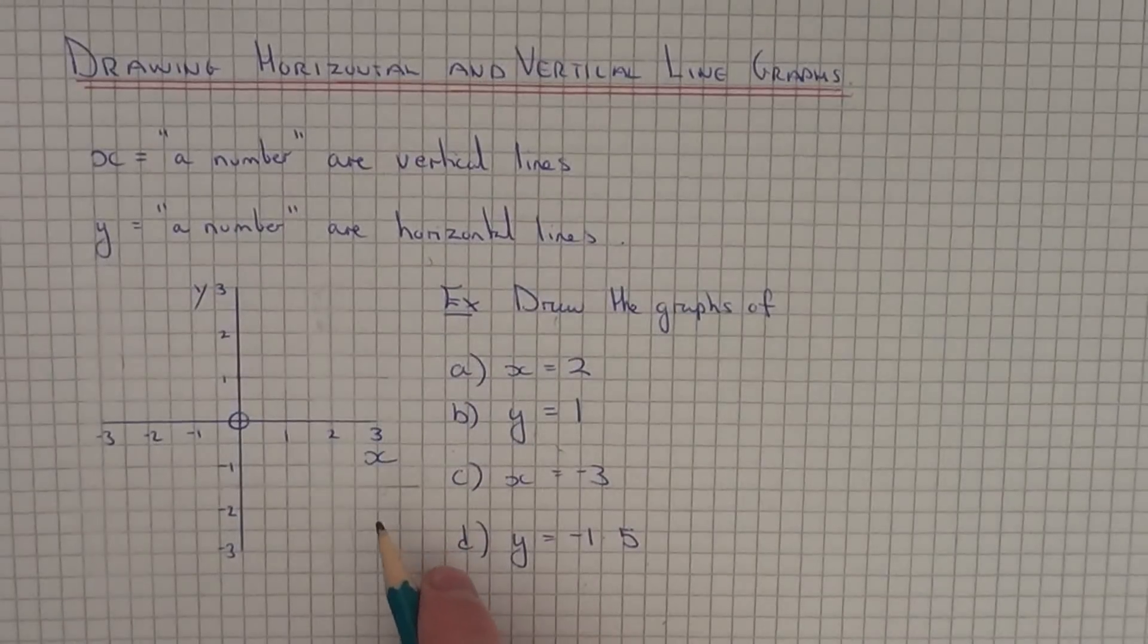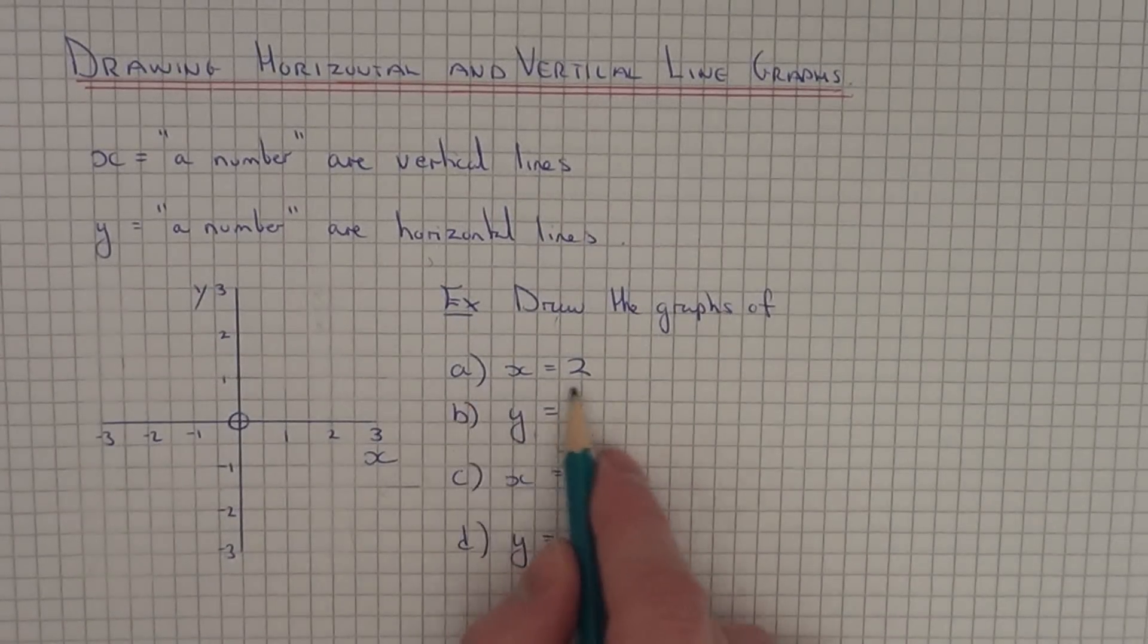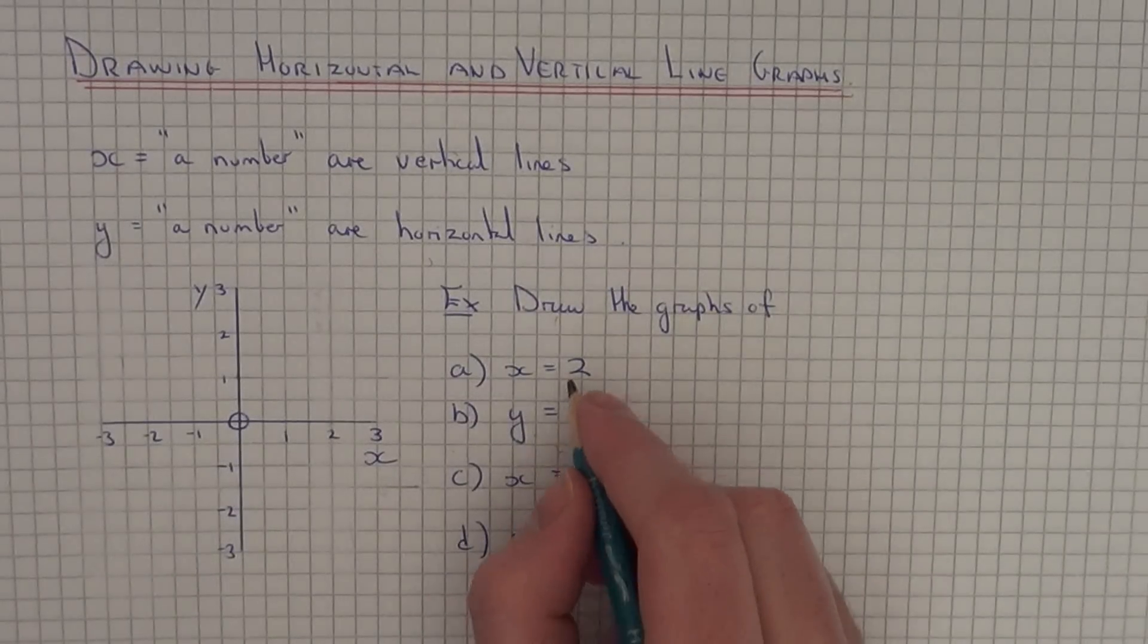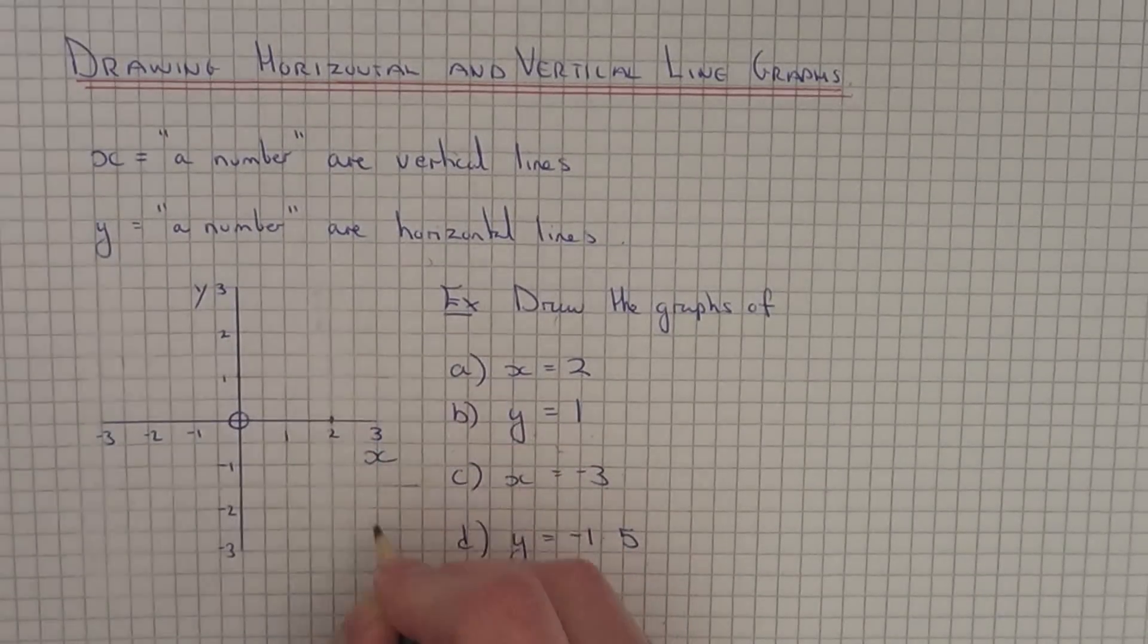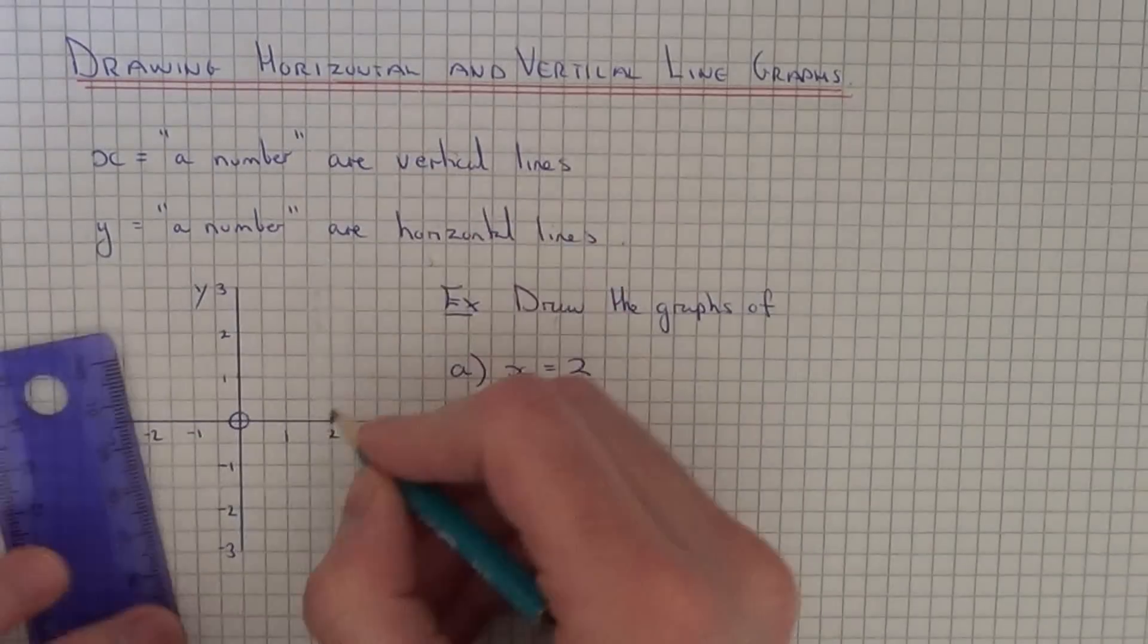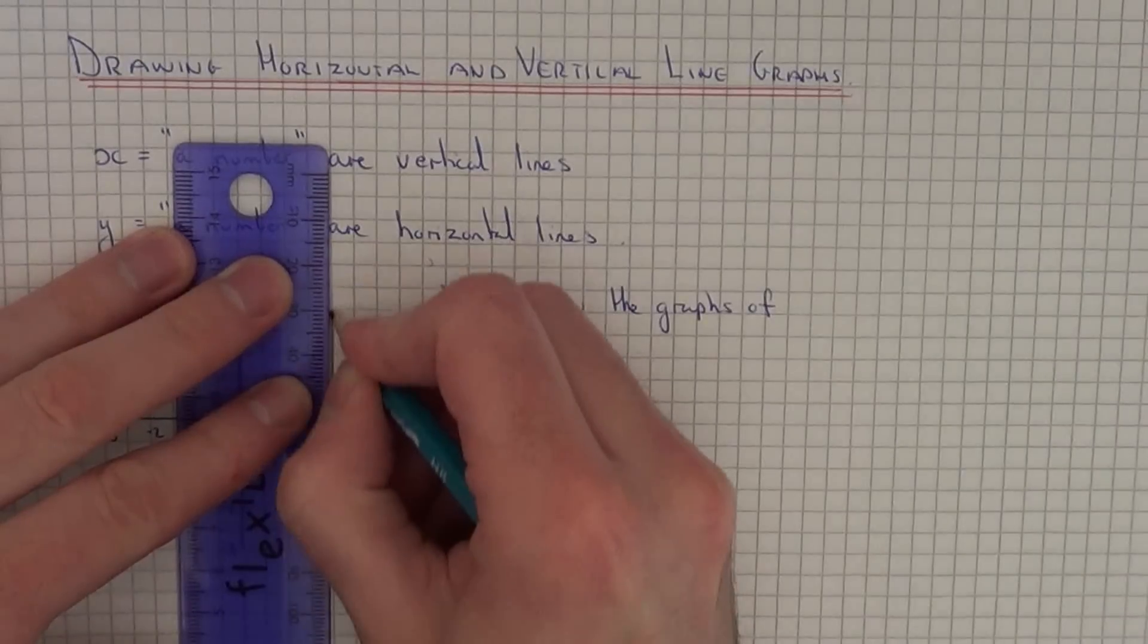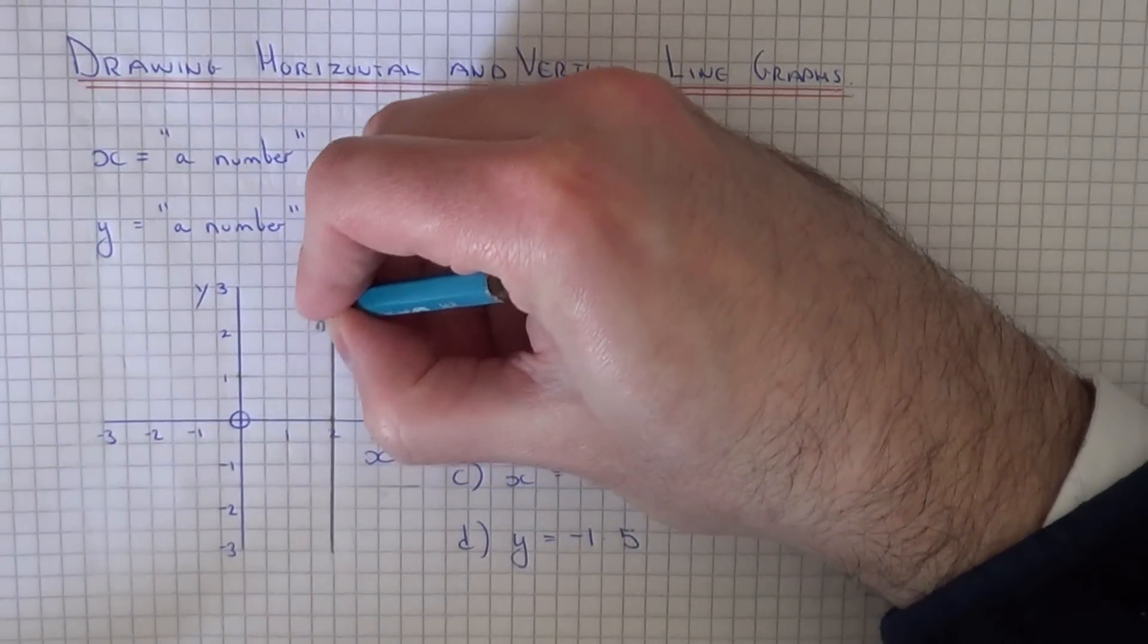So let's take a look at our four examples here. The first example is to draw the graph of x equals 2. So if we find 2 along the x-axis which is here, and it's going to be a vertical line, so it cuts through the x-axis at right angles.